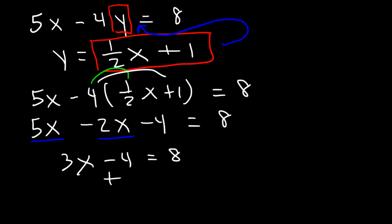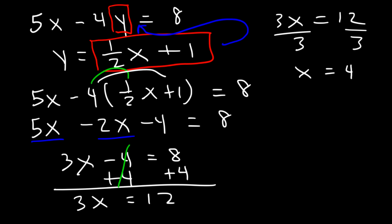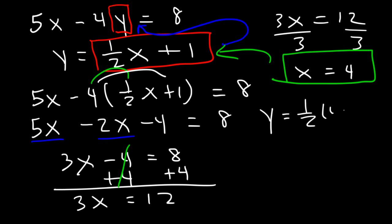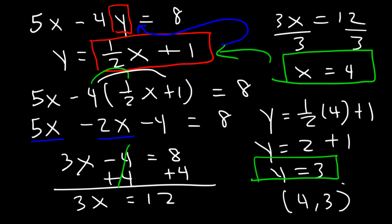In the next step, we can add 4 to both sides. 8 plus 4 is 12, and 12 divided by 3 is equal to 4. So x is equal to 4. Now let's plug it into the second equation to get y. So y is going to be 1 half times 4 plus 1. Half of 4 is 2, and 2 plus 1 is 3. So y is equal to 3. Our solution is 4 comma 3 — x is 4 and y is 3.